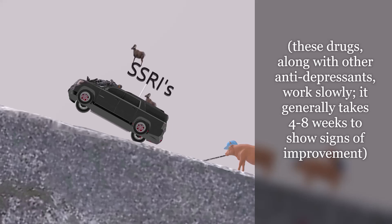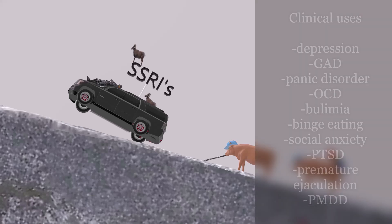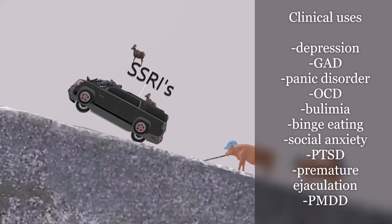It usually takes the patient 4–8 weeks after taking the drugs to show signs of improvement. Other conditions SSRIs are used for include: generalized anxiety disorder, OCD, bulimia, binge eating disorder, social anxiety disorder, post-traumatic stress disorder, premature ejaculation, and premenstrual dysphoric disorder.